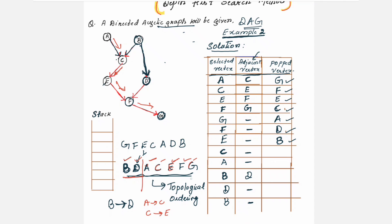This is how you carry out the steps for topological ordering. The time complexity for this algorithm is O(V + E), where V is the number of vertices in the graph and E is the number of edges. This is how you carry out the solution for topological sorting using the DFS method. Hope you find this helpful. Please like, share, and subscribe to my channel. Thank you, bye-bye and take care.